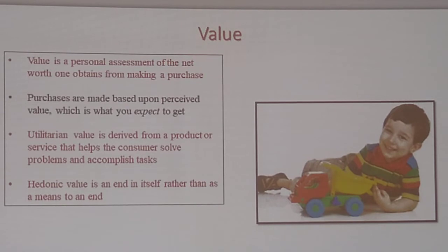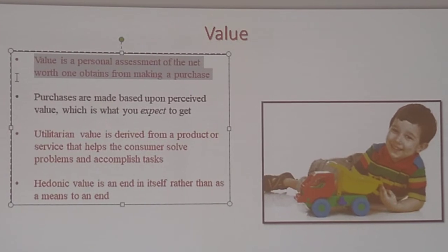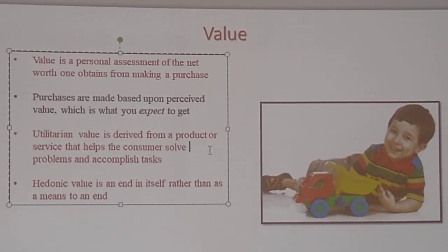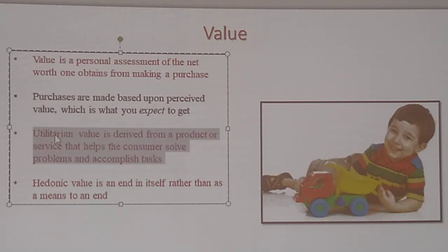These are highlighted terms. Value is a personal assessment of the net worth one obtains from making a purchase. Purchases are made based upon perceived value, which is what you expect to get. A lot of times we have a perceived value or expectation of what we're going to get — sometimes we're happy and satisfied, but sometimes we're disappointed. Utilitarian value is derived from a product or service that helps a consumer solve a problem or accomplish a task. For example, I need dishwashing liquid — that dishwashing liquid helps me solve a problem: it washes my dishes.